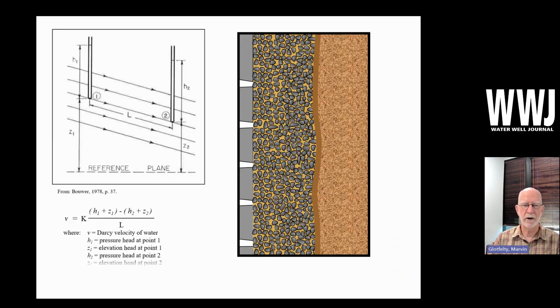So here's a diagram from Dr. Herman Bauer's book. And this illustrates this. This formula you see here is a form of the Darcy equation. The V is Darcy velocity, K is hydraulic conductivity.